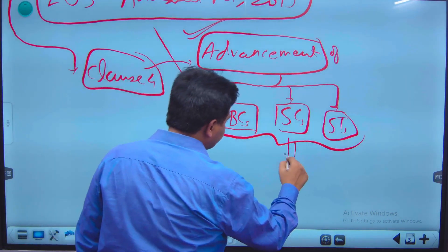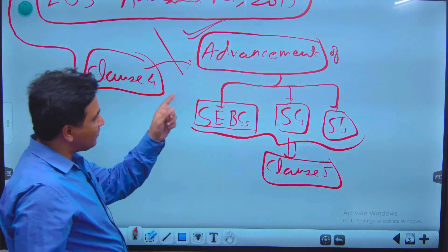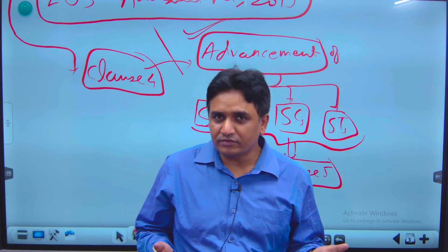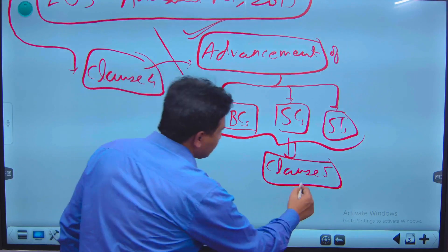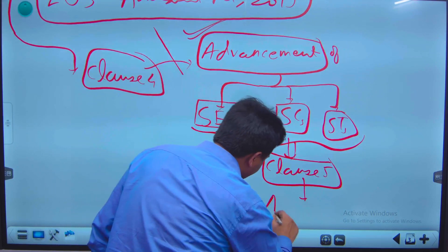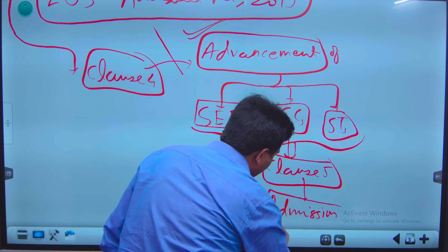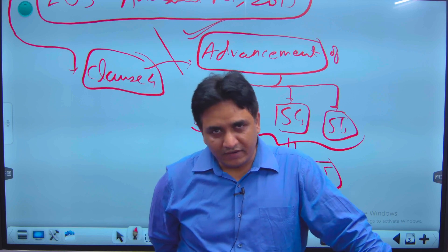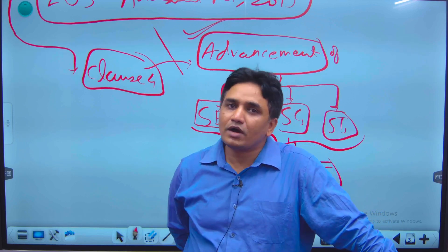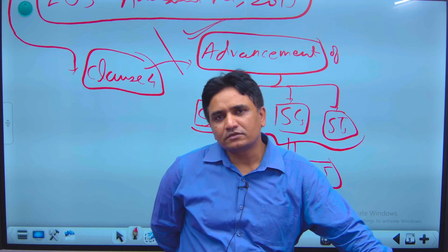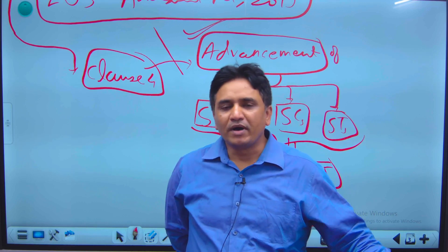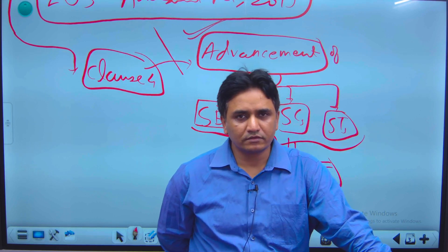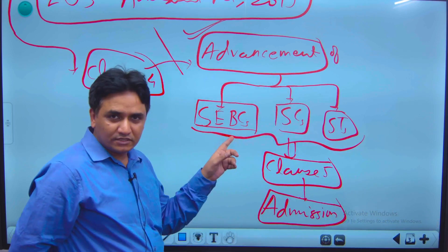Now let us talk about Clause 5. Clause 4 of Article 15 says that the state can make provisions for the advancement of these three categories. Clause 5 talks about admissions — admissions to students in government institutes and in private institutes, whether those private institutes are aided or unaided by the government. But this clause excludes minority institutes — those instituted or constituted under Article 30 Clause 1. In those institutions, this reservation is not going to work.